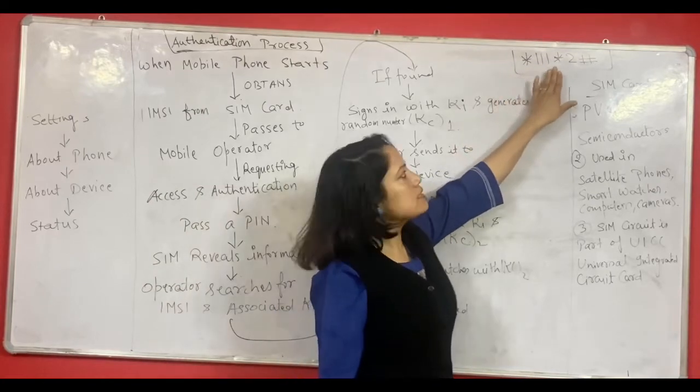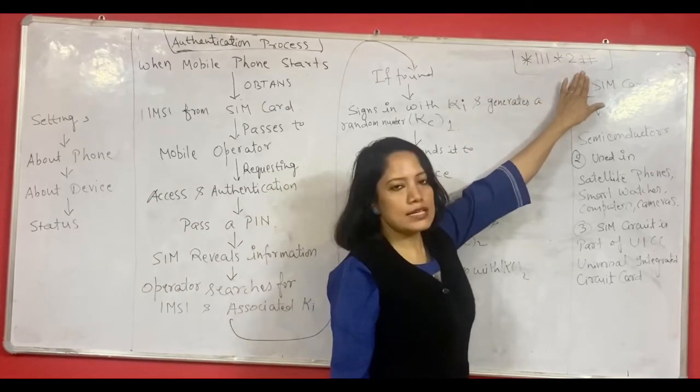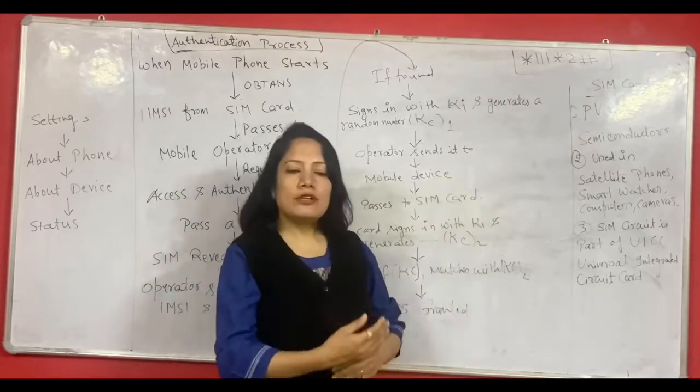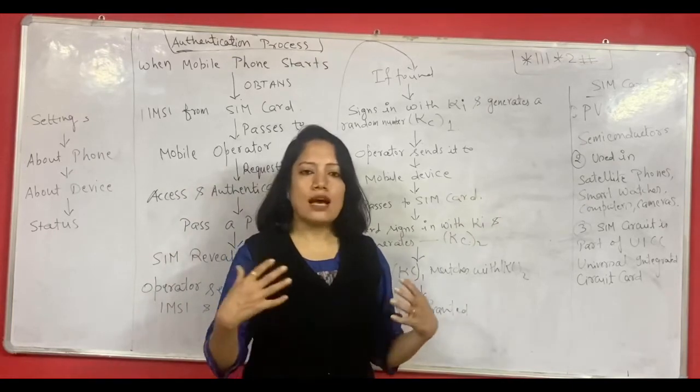Star triple one star two hash. And then you will be able to see your SIM number and various other information. You may also be able to explore using this.